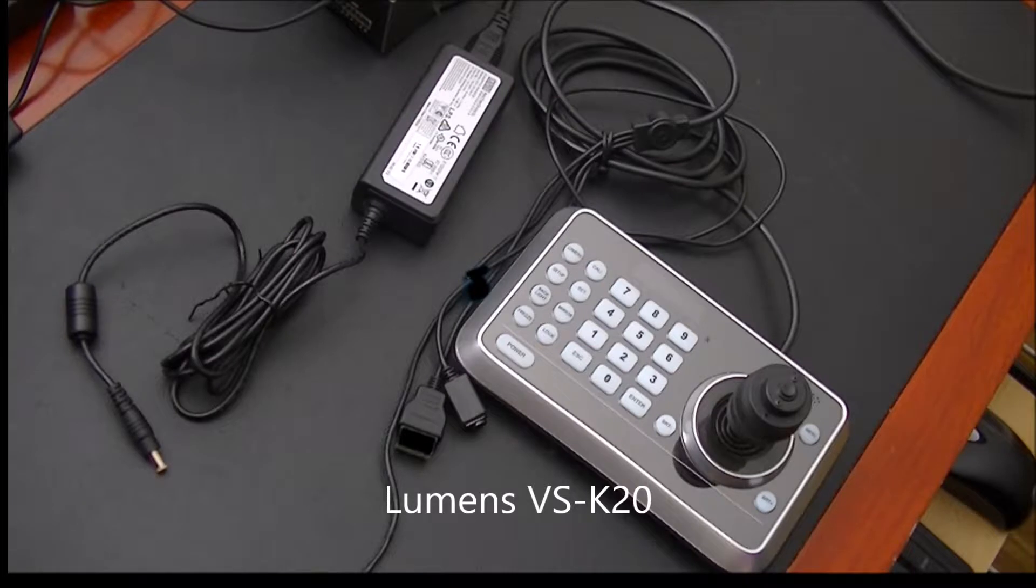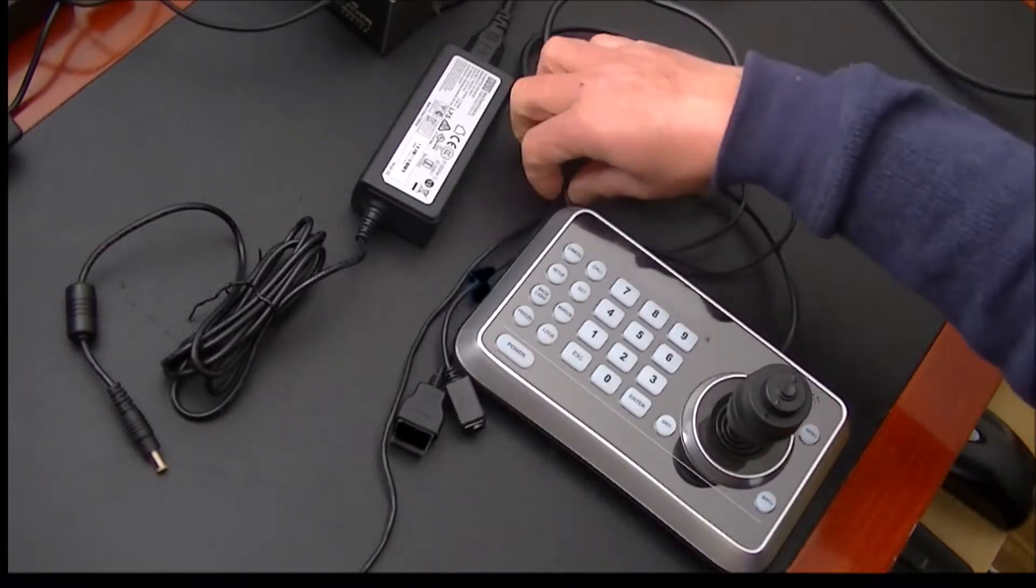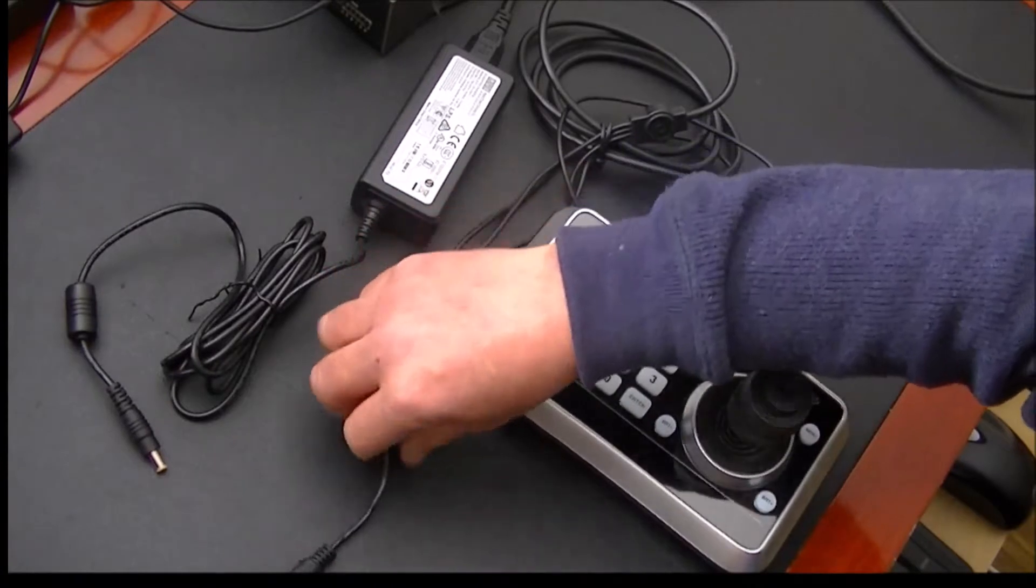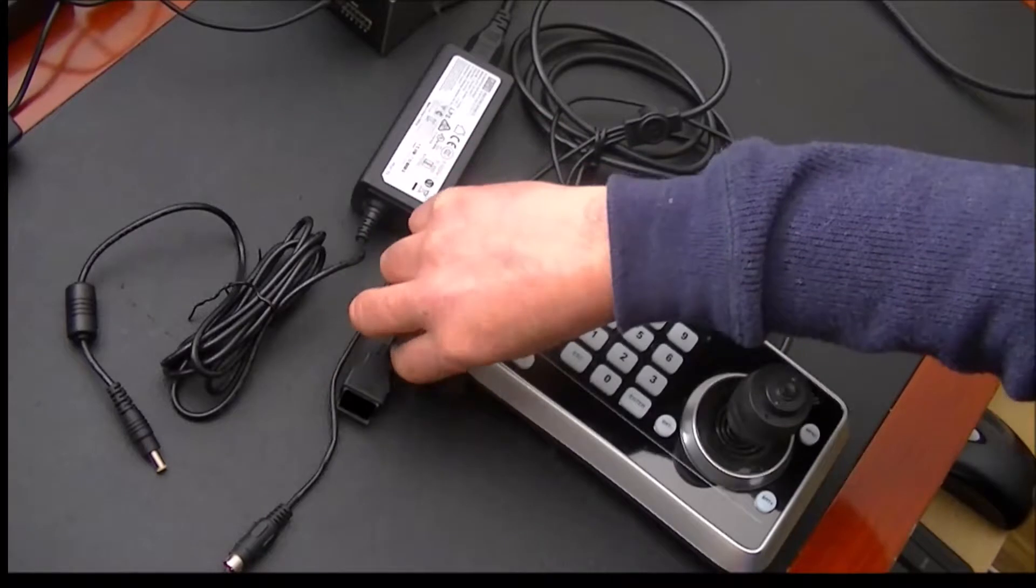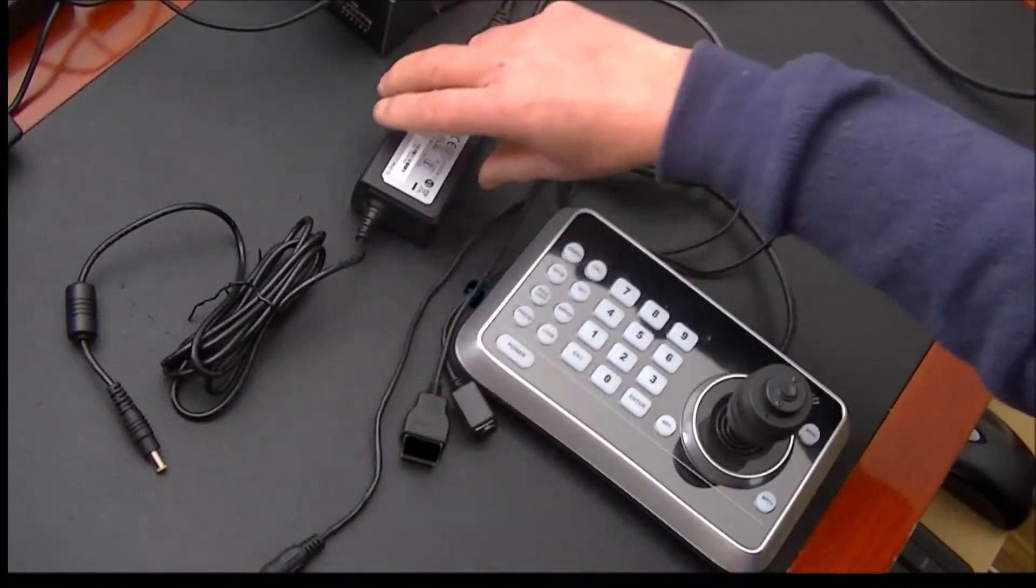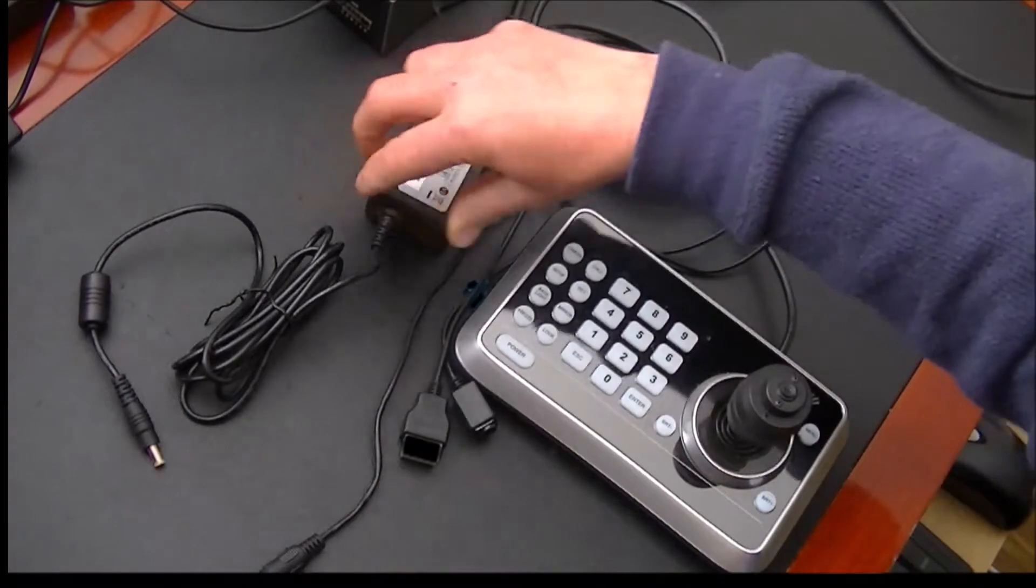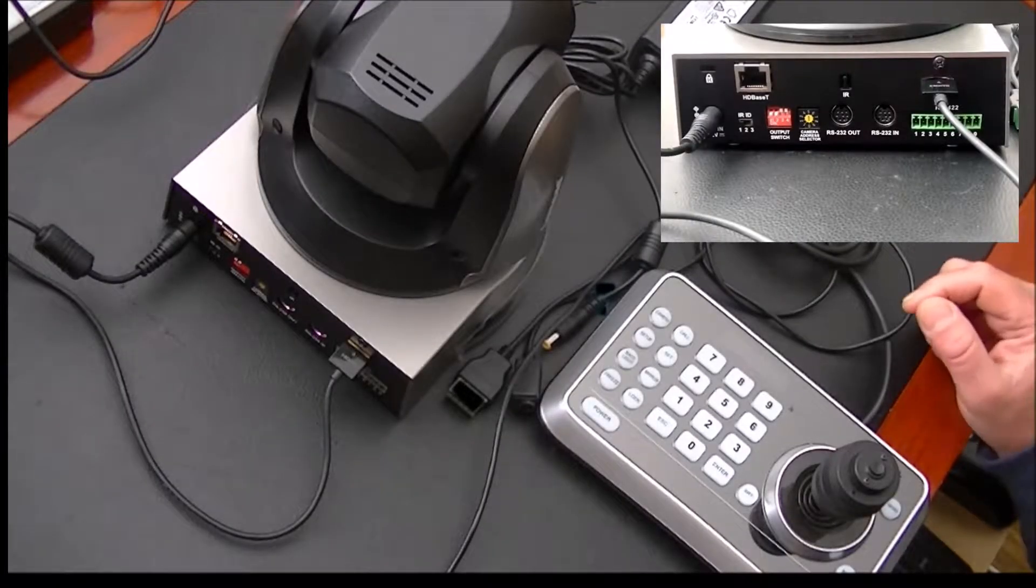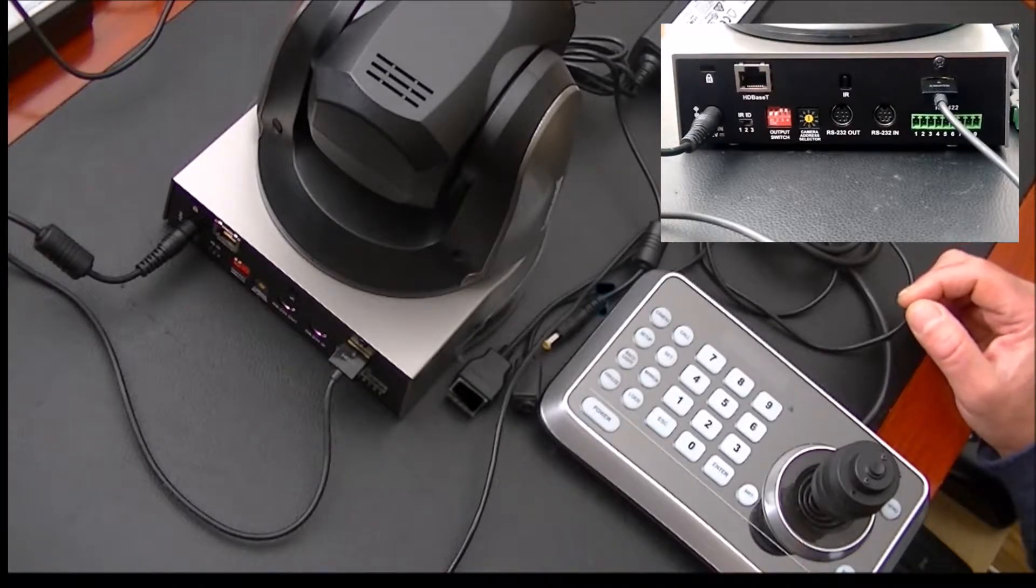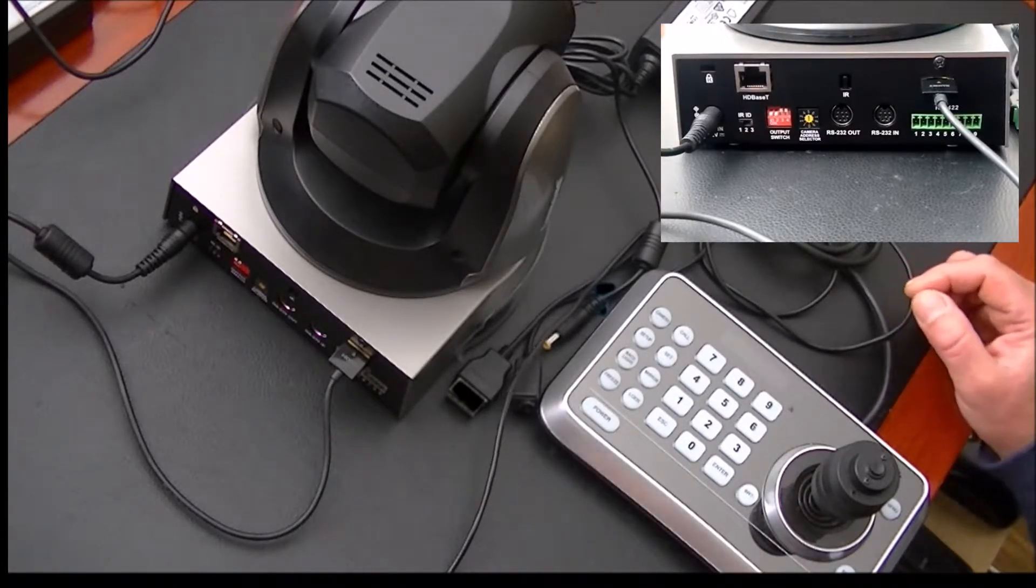I'm going to introduce you now to the Lumens VS-K20 compact camera controller. This controller works with the protocol VISCA and Pelco-D. The controller comes with connectors on the RS-232, RS-422, and the power terminal, and comes with the 12 volt power supply and its connector. First we are going to connect the RS-232 into the RS-232 input of the camera.